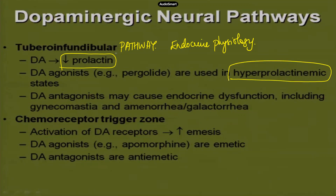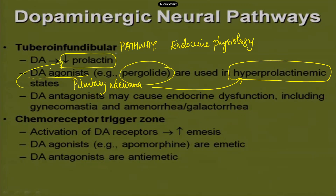Shutting down prolactin in cases of adenomas prevents the effects of high prolactin. Dopamine blockers, on the other hand, cause too much prolactin to be released — resulting in gynecomastia in males and amenorrhea or galactorrhea in females. Apart from prolactin, dopamine also has an effect on growth hormone — it causes a decrease in growth hormone. As a result, dopamine agonists are used in acromegaly and gigantism. So remember: dopamine decreases both prolactin and growth hormone.